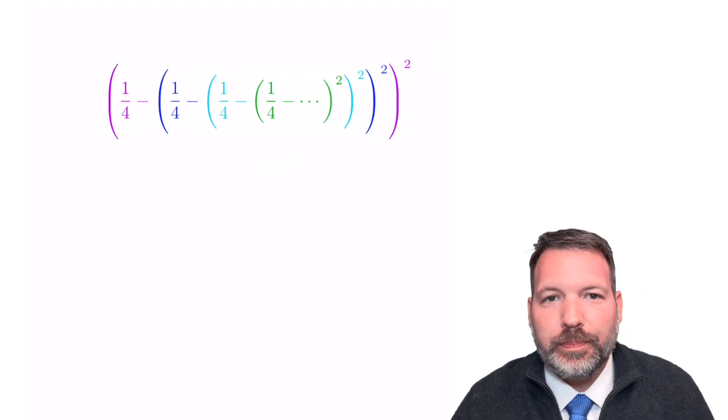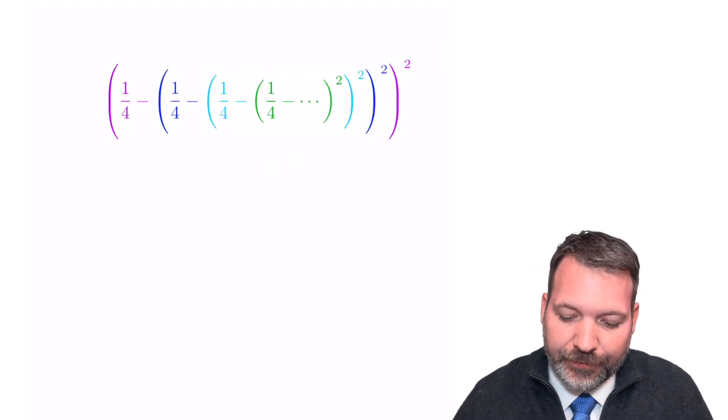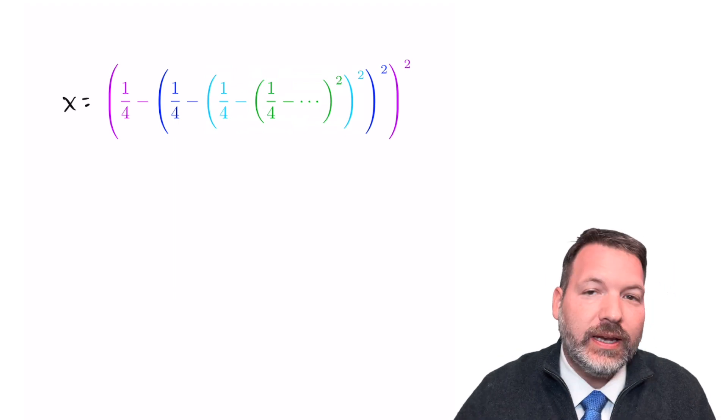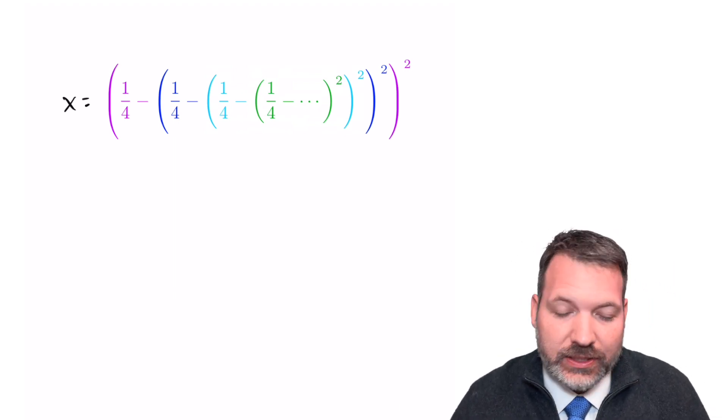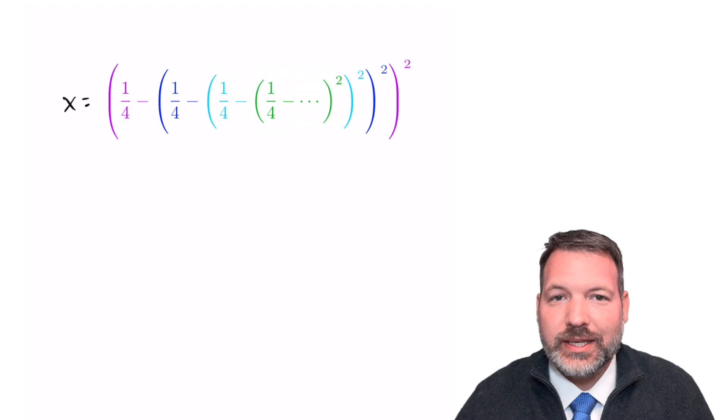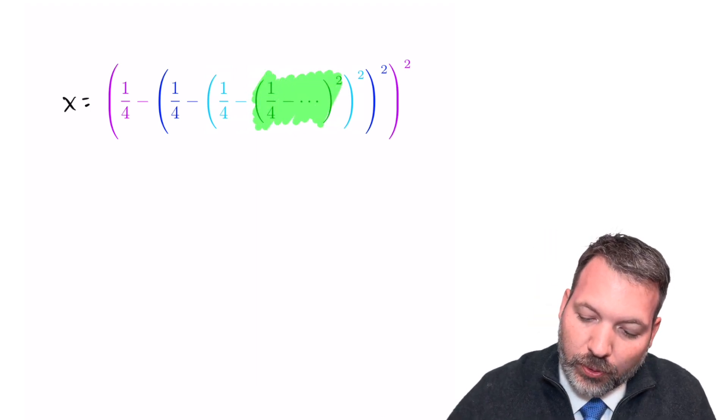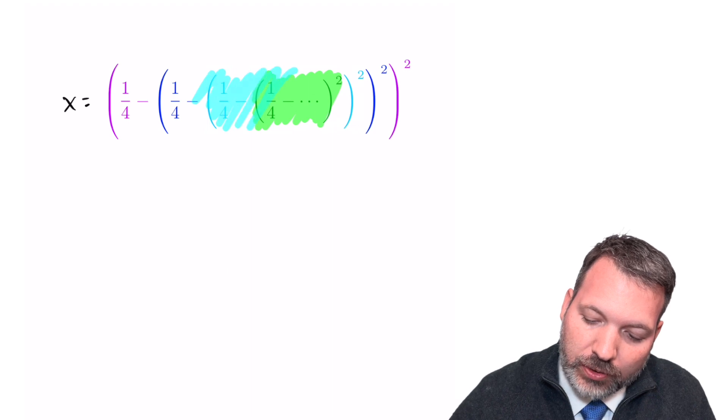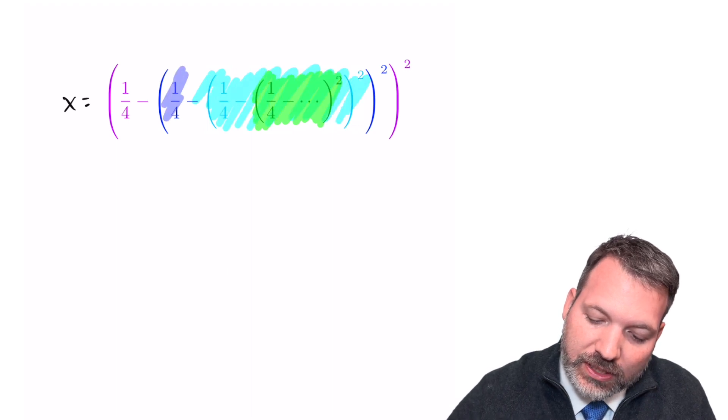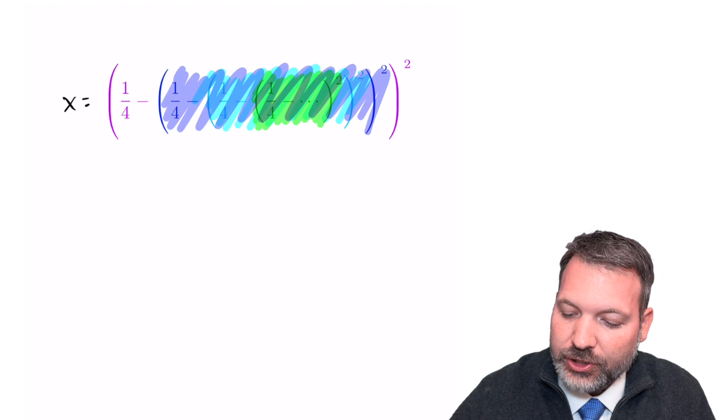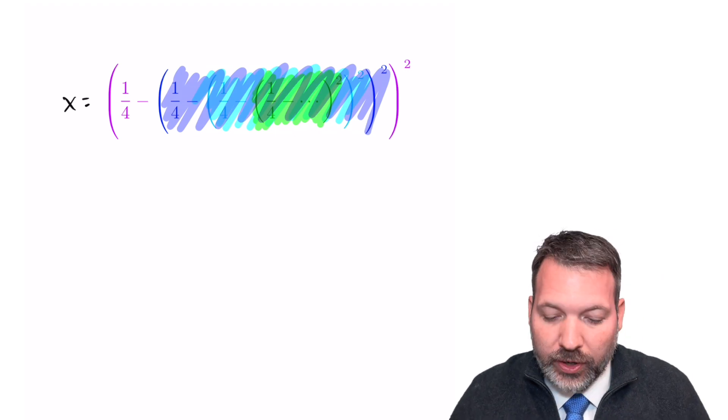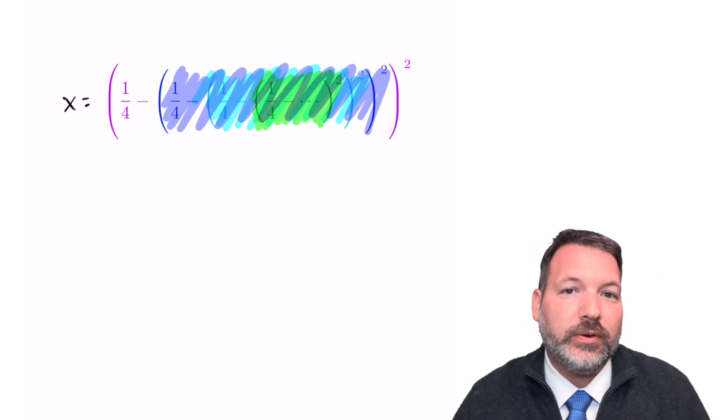This quick and dirty method basically has two steps. The first step is let's go ahead and name the value of this series. Let's call it x. The next step is to recognize that it's a self-similar series. That is, if you start looking at this innermost portion and then slowly zooming out from there, you can see that at each step in the computation of the nested series,